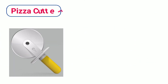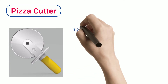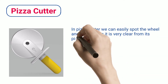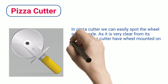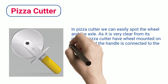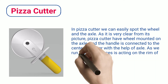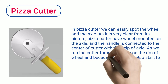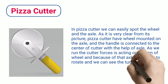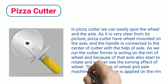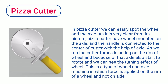Pizza Cutter. In a Pizza Cutter we can easily spot the Wheel and the Axle. The Pizza Cutter has a wheel mounted on the Axle, and the Handle is connected to the center of the Cutter with the help of an Axle. As we run the Cutter, force acts on the rim of the Wheel, causing the Axle to also rotate, and we can see the turning effect of the Wheel. This is a type of Wheel and Axle Machine in which force is applied on the rim of the wheel and not on the Axle.